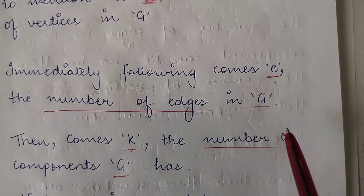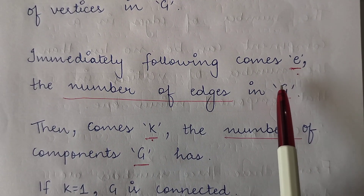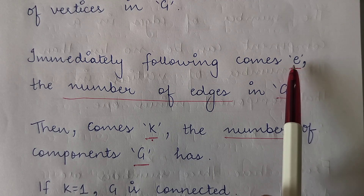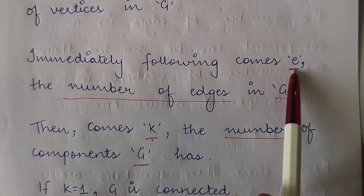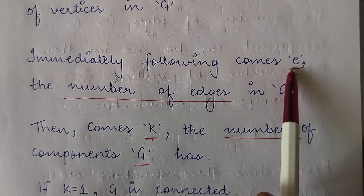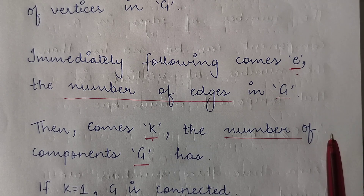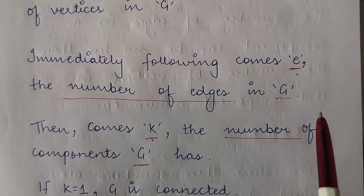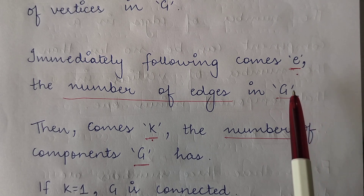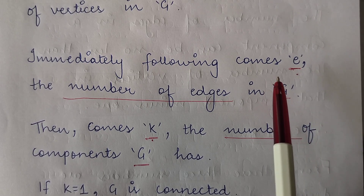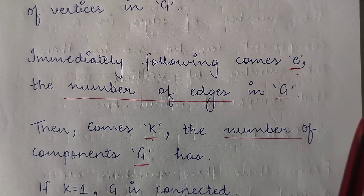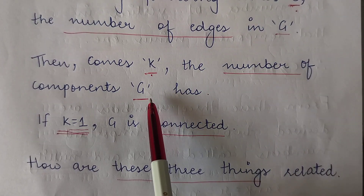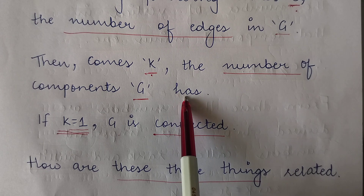Immediately after thinking about the number of vertices in the graph, the next term that comes to our mind is the number of edges in the graph denoted by E. So the two most important terms related to a graph are the number of vertices and the number of edges connecting those vertices. Then comes K, that is the number of components the graph G has.